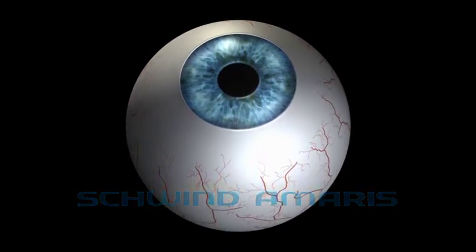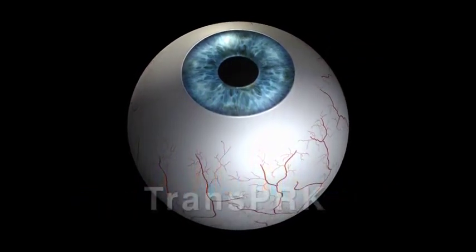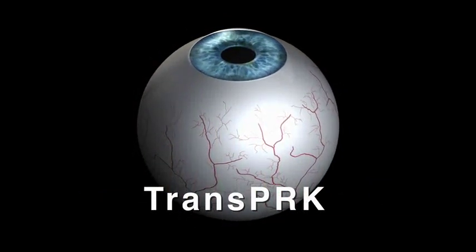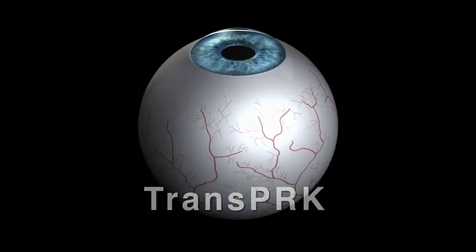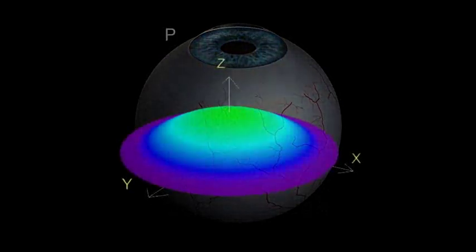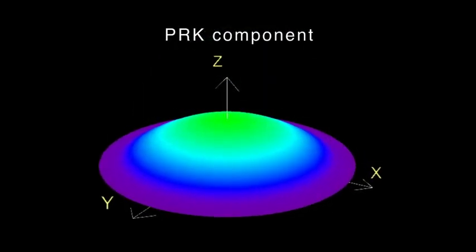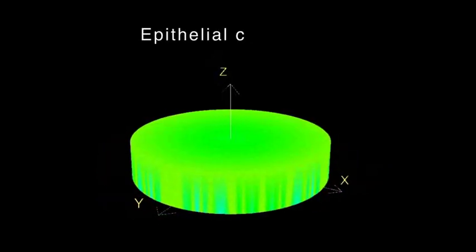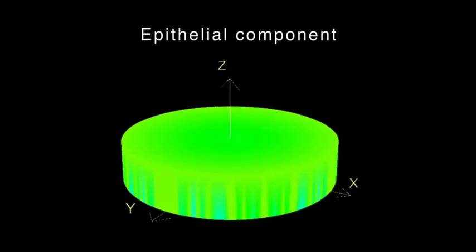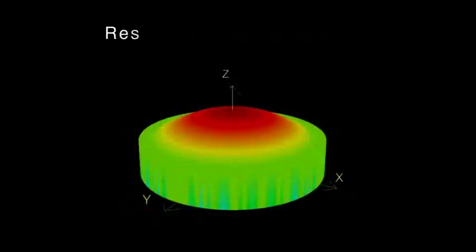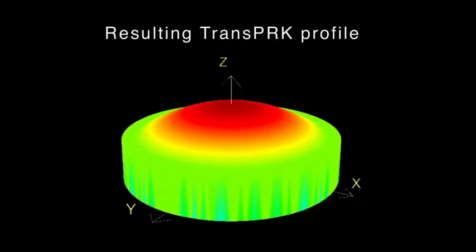The Schwind Amaris laser systems provide a sophisticated approach to carry out no-touch all-laser surface ablations. TransPRK treats refractive errors by superimposing an aspheric ablation profile with a defined epithelial thickness profile based on literature values and mean epithelial profiles of large patient populations.